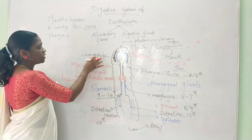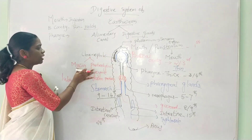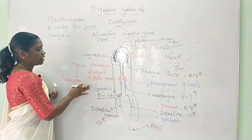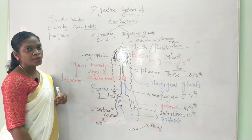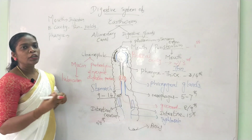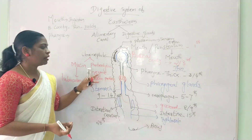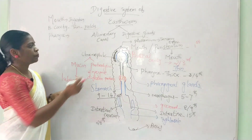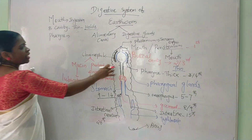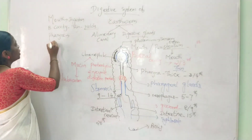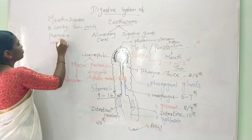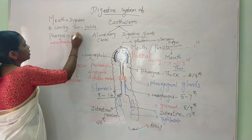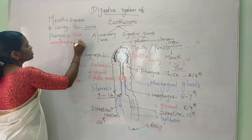So in the pharyngeal glands, chromophil cells secrete 2 substances for digestion. Pharynx leads to the esophagus. The esophagus has a thick wall structure.